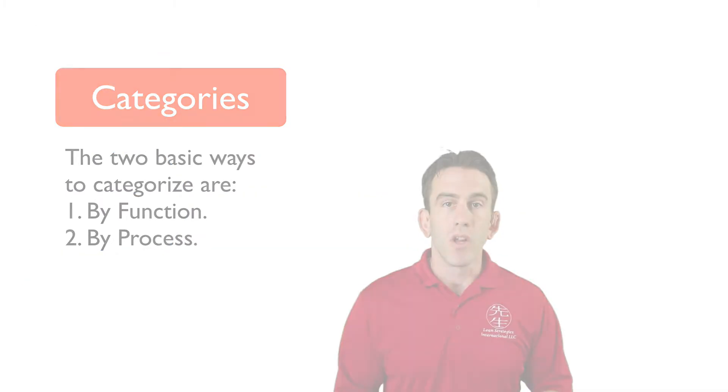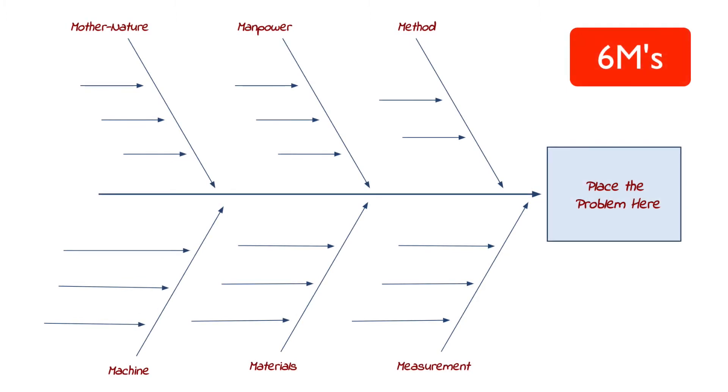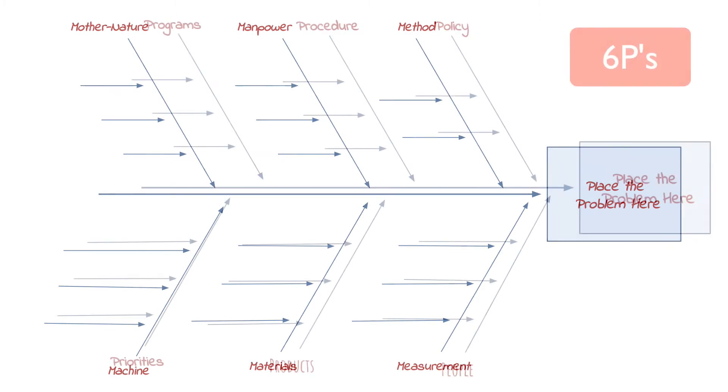When mapping by function, the fishbone diagrams are typically laid out already. Categories are pre-established, which makes the mapping easy. Two basic types of functional mapping are the manufacturing fishbone and the transactional fishbone.